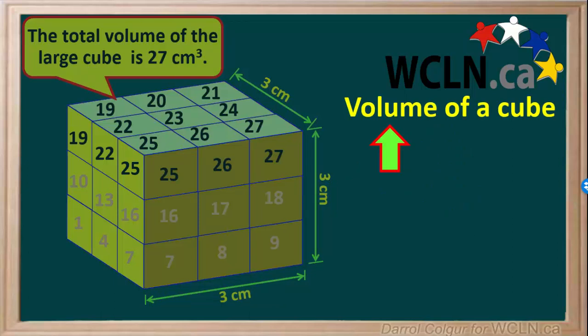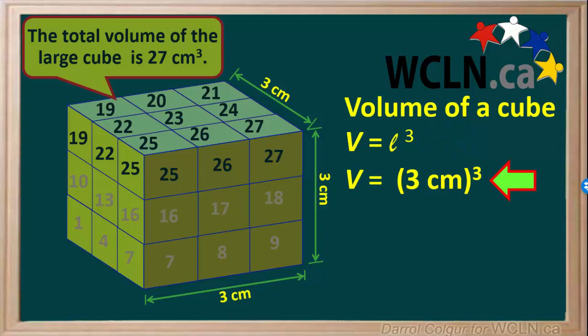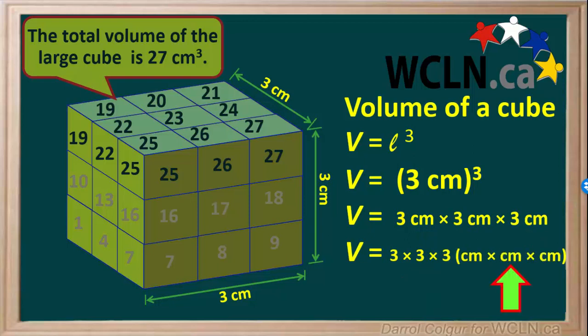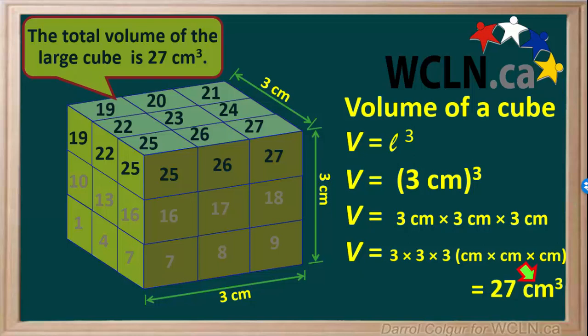Now we'll recall the formula for the volume of a cube. If the length of one side of a cube is L, then the volume is equal to L cubed. The length of each side of the large cube is 3 cm, so V equals (3 cm)³. That is 3 cm times 3 cm times 3 cm, which can be regrouped as 3 times 3 times 3, times cm times cm times cm. 3 times 3 times 3 equals 27, and centimeters times centimeters times centimeters is called centimeters cubed.